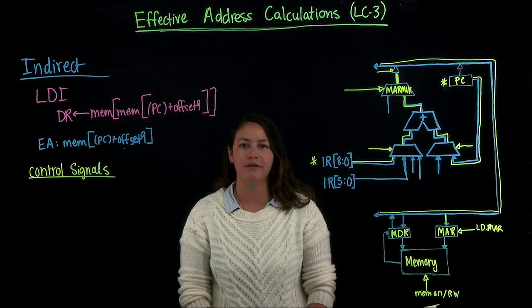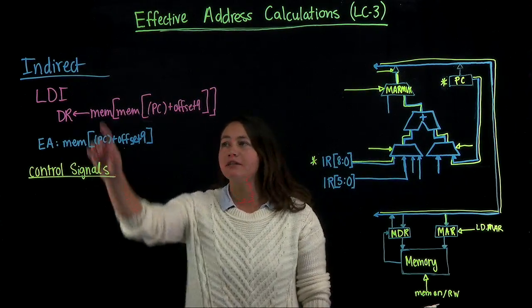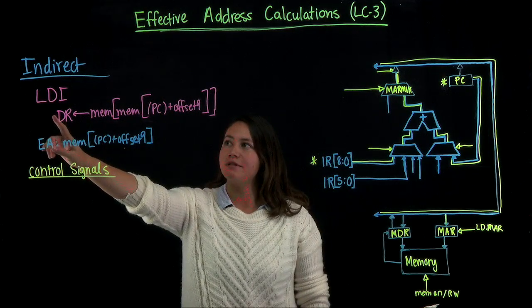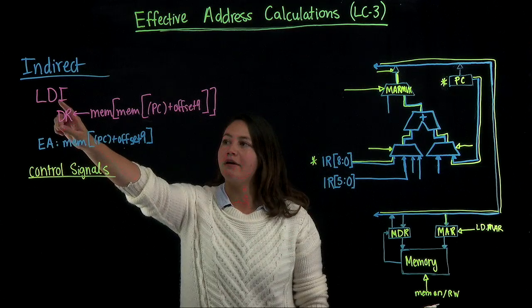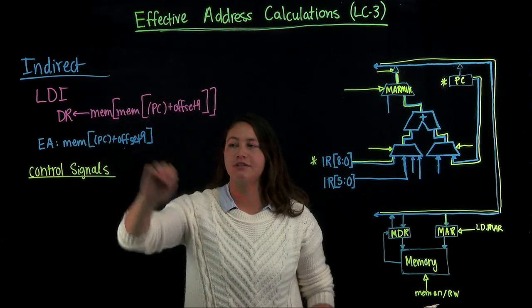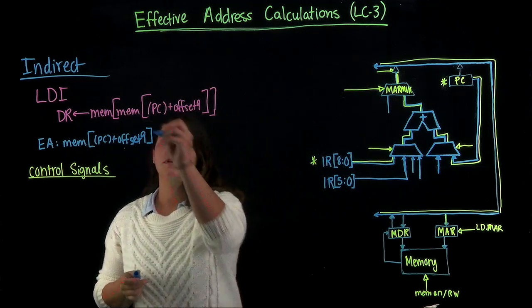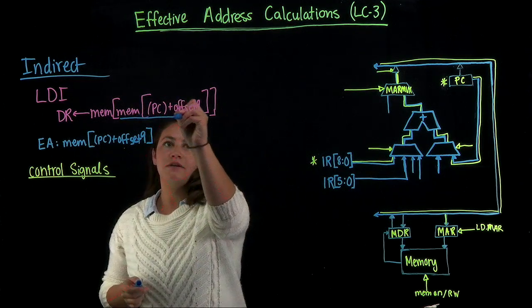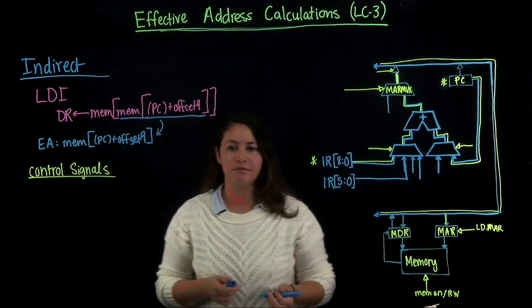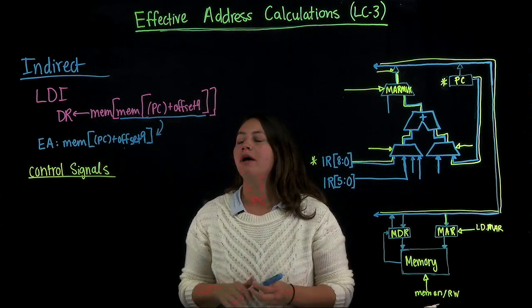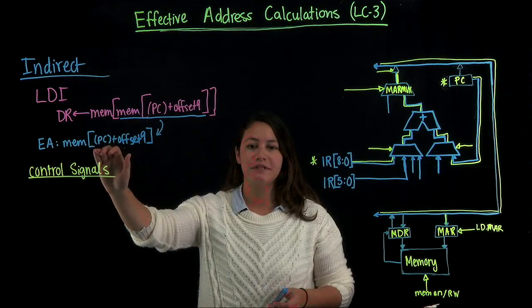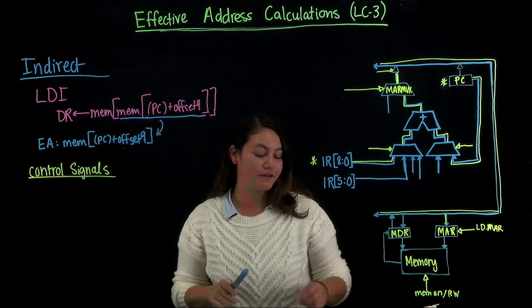Now we're going to look at how we can calculate the effective address for the indirect addressing mode. A sample instruction that uses the indirect addressing mode would be LDI, and the register transfer notation for that instruction is right here. We can look at this part right here, which is going to be our effective address for the instruction. Any other instruction that uses the indirect addressing mode will have the same effective address.